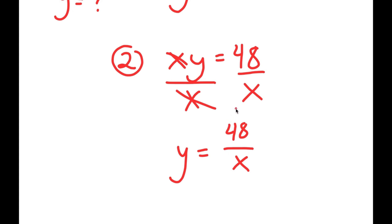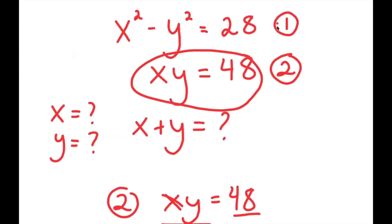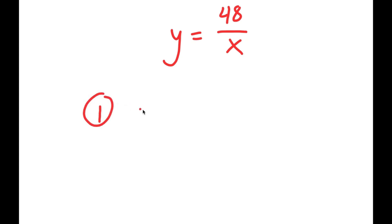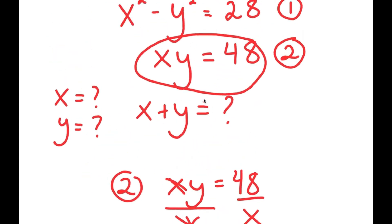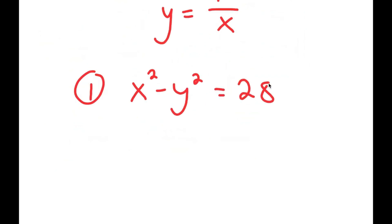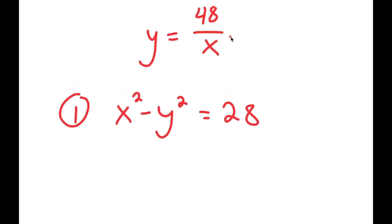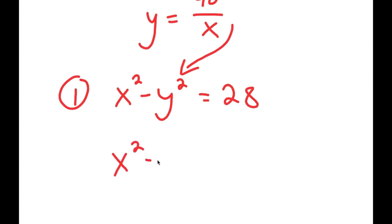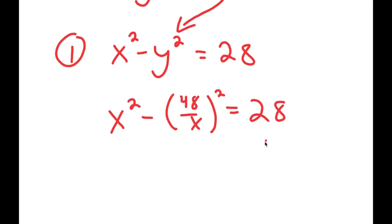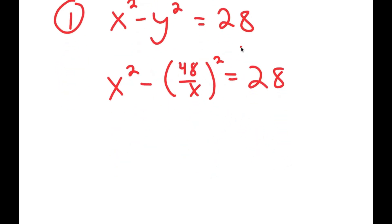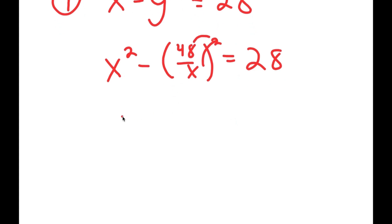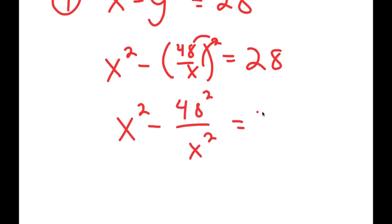Using this expression for y, I can plug it back into equation one. Equation one is x squared minus y squared equals 28. Substituting y equals 48 over x, I get x squared minus 48 over x, all squared, equals 28. Applying the square, this becomes x squared minus 48 squared over x squared equals 28.